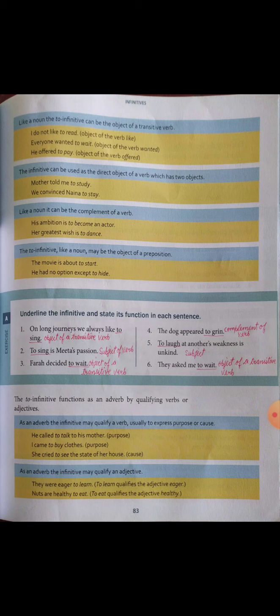Like a noun, the 'to' infinitive can also be the object of a transitive verb. For example: 'I do not like to read' — here 'to read' is the object of the verb 'like.' 'Everyone wanted to wait' — object of the verb 'wanted.' 'He offered to pay' — object of the verb 'offered.'